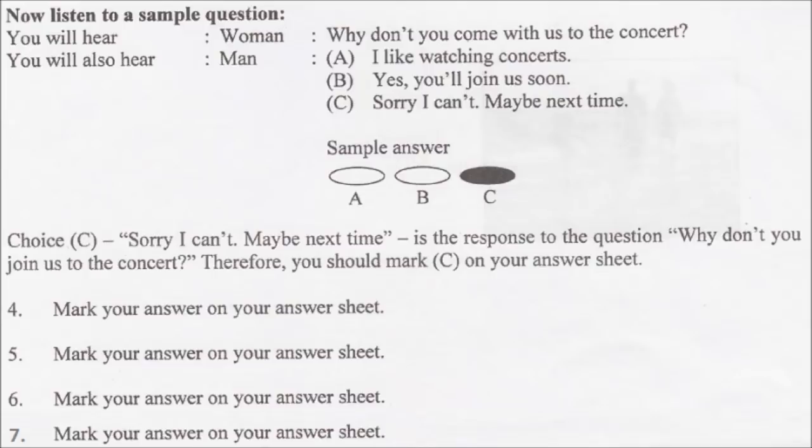Number 6. How do I get to the boardroom? A. She is getting bored. B. Just walk around the corner. C. We don't have enough rooms.